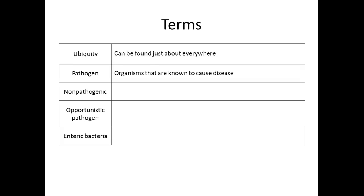Non-pathogenic means not known to cause disease. Just because we say something is non-pathogenic, science is ever-changing — the next day it could actually turn out to be a pathogen. We just didn't know that it was a pathogen. Notice the word 'not known.'